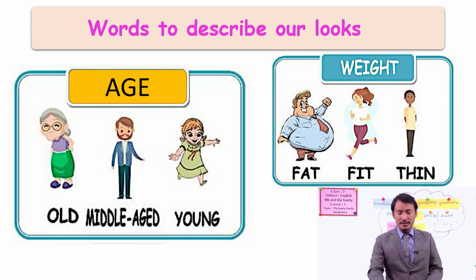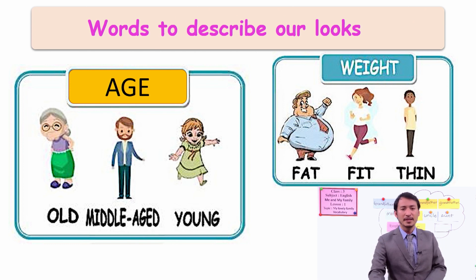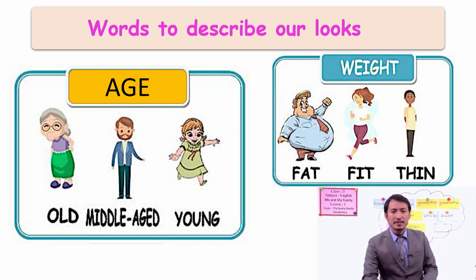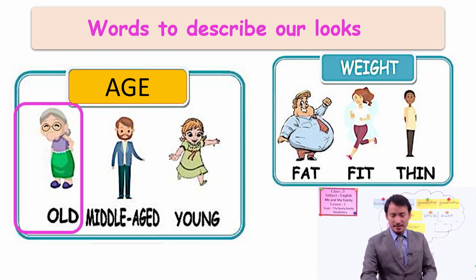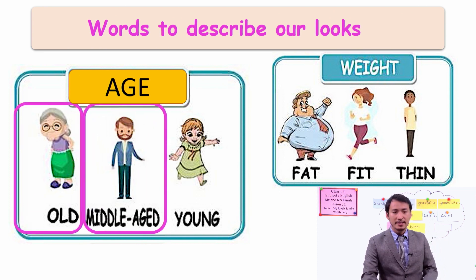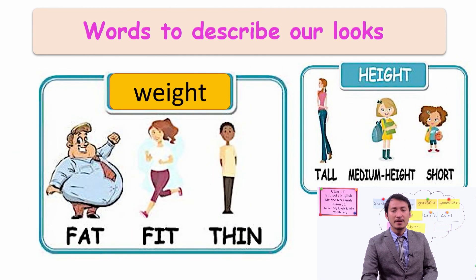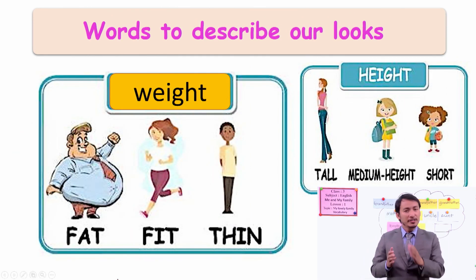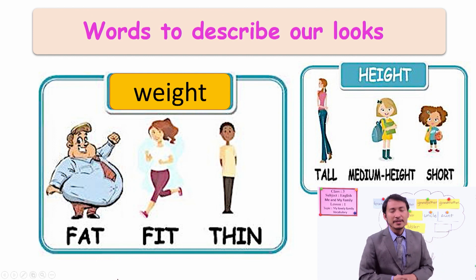This is how we can describe from the age side. Now according to weight, we can describe people. If you have very, very big body and much weight, then you can say someone is fat.